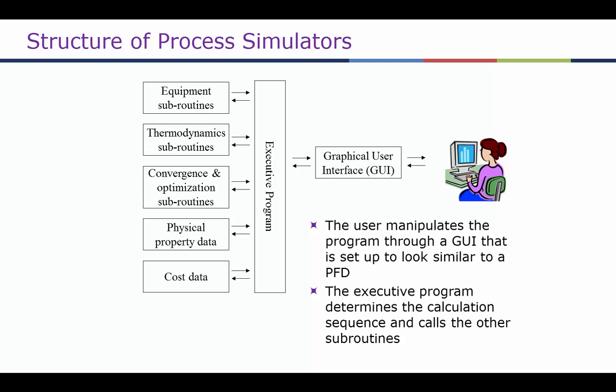The executive program determines where that information should go, and accordingly it can pull out a subroutine like equipment subroutines — these could be the blocks — or thermodynamic subroutines, which are in the properties methods.